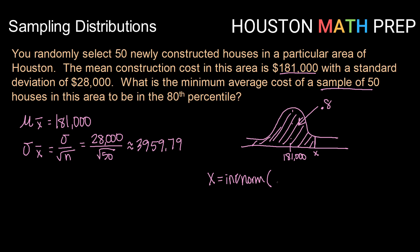I'm going to give it the area to the left on my distribution, that's 0.8. I need to give it the mean of my distribution, which is $181,000. And then I need to give it my standard deviation for my distribution. Now that is again, that's my standard error here and I need to use my unrounded version. So that's going to be $28,000 divided by the square root of 50. So typing those values in, we get $184,332.65 would be the minimum price to be in the 80th percentile.